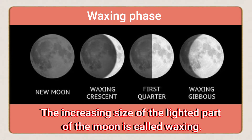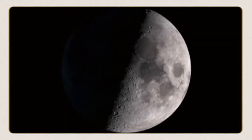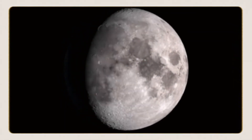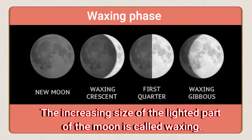As the new moon begins and the moon orbits, we can see the lit portion of the moon goes on increasing day by day. This increasing size of the lighted part of the moon is called the waxing phase.